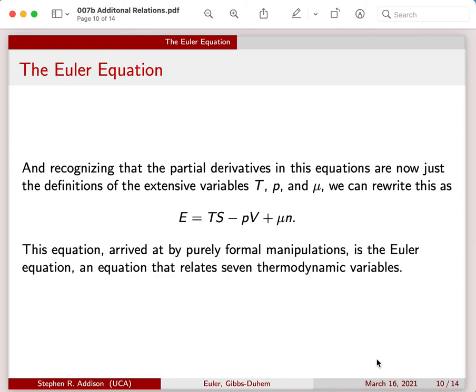Seven variables - they're not all extensive. Temperature, pressure, and chemical potential are intensive. But it does relate seven of the variables for us. And it may not be that useful itself because we would need to know lots of the variables to calculate the seventh one. So normally we would use a simpler expression.